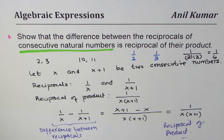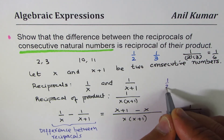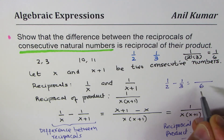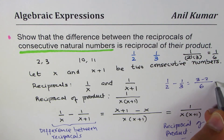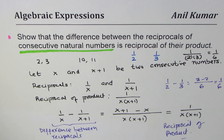To verify: one over two minus one over three, with common denominator six, gives three minus two over six, which is indeed one over six. That confirms the result. Thanks for watching and all the best.